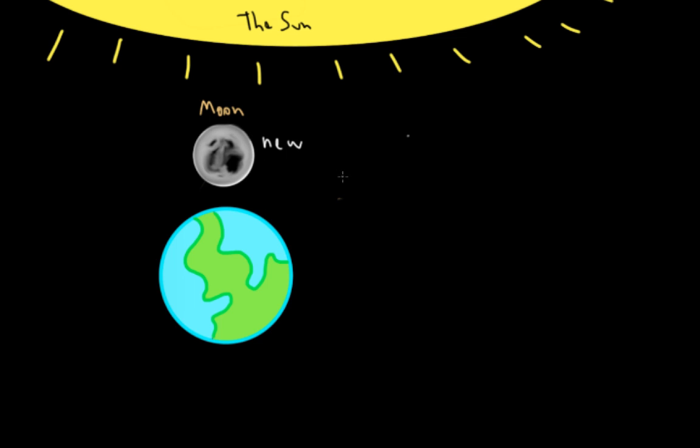And a new moon looks like nothing in the sky. You really can't see this. And the reason is because as the light from the sun comes to the moon, it's only going to hit the side that's facing the sun. And since this side of the moon is not visible from the earth...